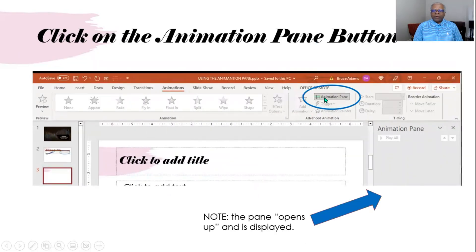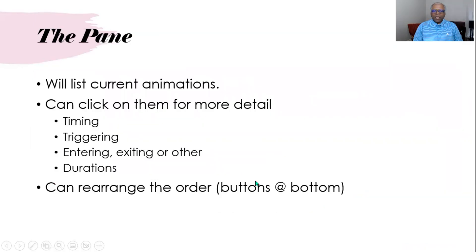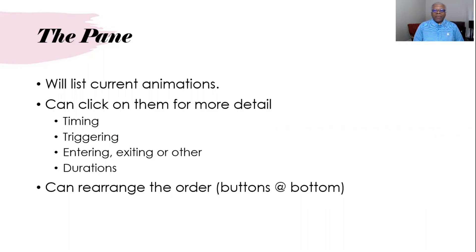Once you click on the Animation Pane button, the pane opens up on the right side. It will list the current animations. From there, you can modify the timing, the triggering — whether it's on a click or a pause, or with the previous slide or after the previous — whether you want the animation to enter, exit, have emphasis, or have motion. There are also durations and other things.